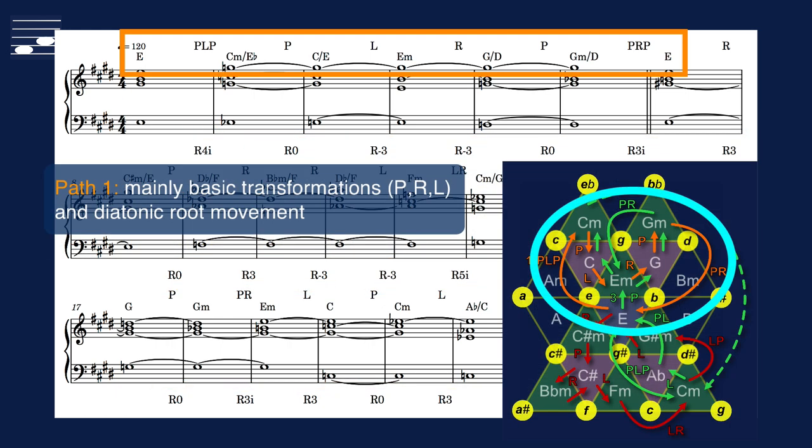In the Tonnetz diagram I've color-coded different sections from the full path. Here we see the first section, which consists of mainly basic Neo-Riemannian transformations, and therefore diatonic root movement. We are moving through the major and minor triads above the starting triad E major.